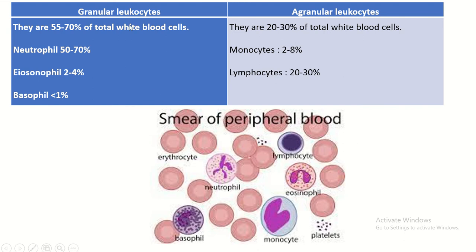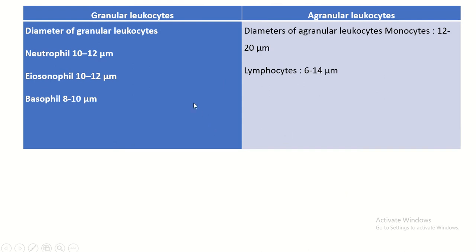The percentage of white blood cells in the blood smear: granular leucocytes constitute 55 to 70% of total white blood cells, and agranular leucocytes constitute 20 to 30%. Agranular leucocytes are slightly bigger in diameter than the granular leucocytes.